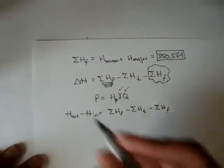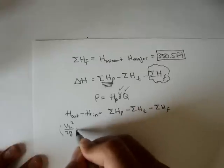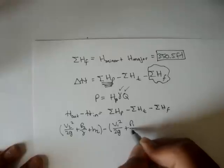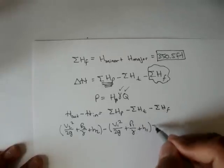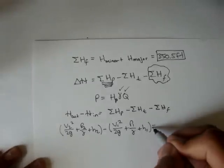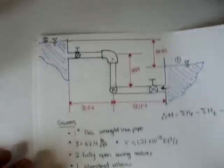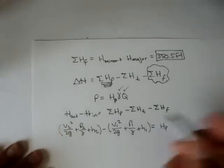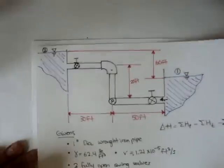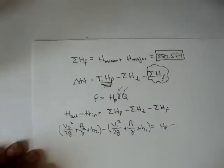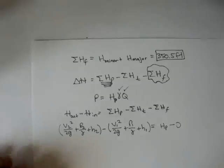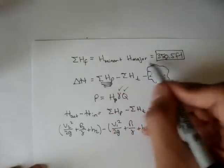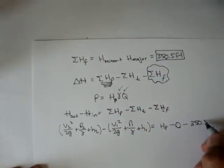So we can write that, we can write v2 squared over 2g plus the pressure at 2 over gamma plus the height at 2 minus v1 squared over 2g plus the pressure at 1 over gamma plus the height at 1 is equal to the summation of all the pump heads. And remember, if you look back at the picture, there's only one pump. So we can just write the pump head minus the turbines. Are there any turbines in this picture? No. So we can say that's zero. And then minus the frictional head losses, which we found using our major and minor losses to be 350.5 feet.